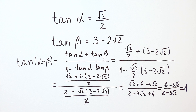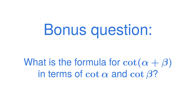With that in mind, I leave you with this question: what is the formula for the cotangent of alpha plus beta in terms of the cotangent of alpha and the cotangent of beta? That is all for this video. If you liked it, click the like button — it helps with the YouTube algorithm. I'll see you next time.